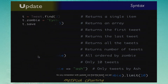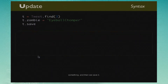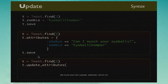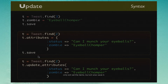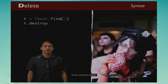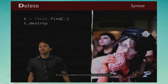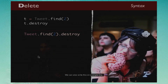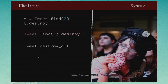For update, we find the tweet, set something, and then save it. Alternatively we can use set_attributes with a hash and then save it, or call t.update_attributes which sets the items and saves them in one step. For destroy — because zombies like destroying things, especially brains — we can find an item and destroy it, write it on a single line, or if you want to destroy all tweets, call Tweet.destroy_all.